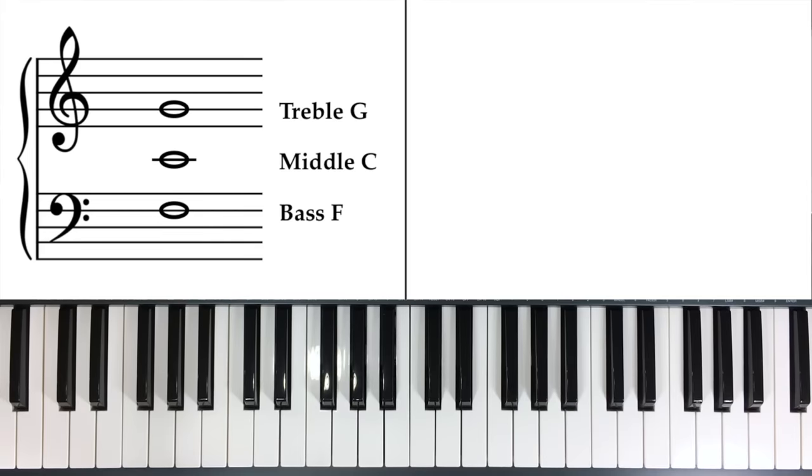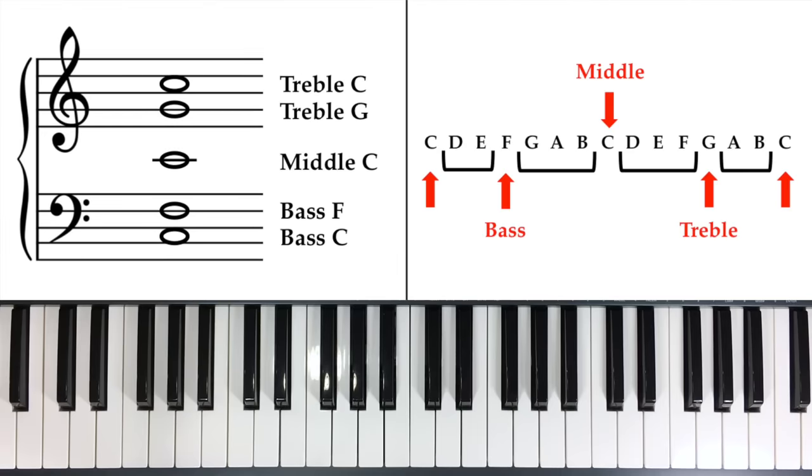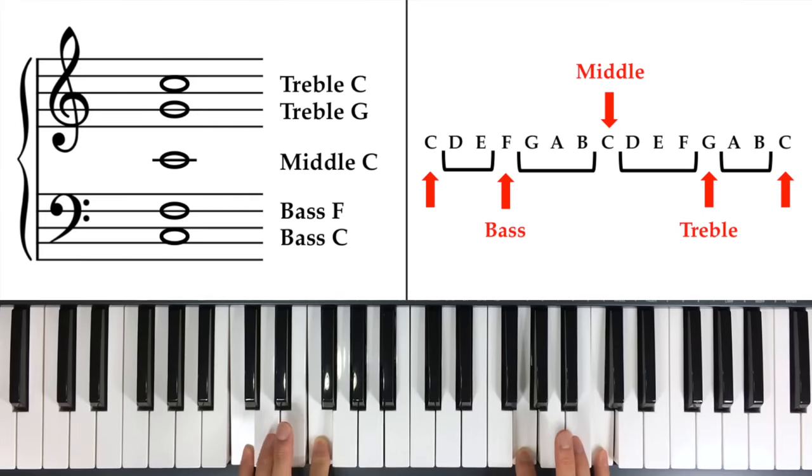All right, so now that we have these three core landmarks, let's expand outward to the next landmarks. So our next two landmarks are treble C and bass C. Notice again you're expanding equally outward. So you have your treble G C and your bass F. Now you go three letters out and you have your two C's. So you have your bass C and your treble C.